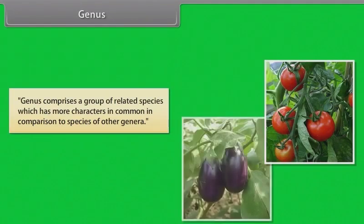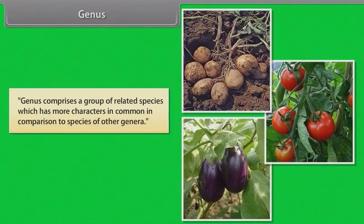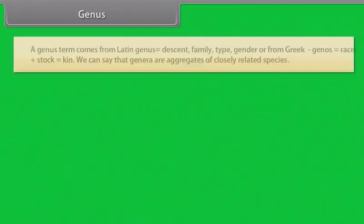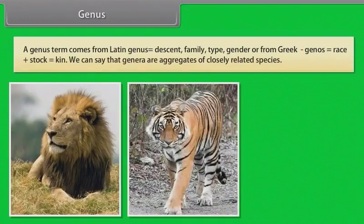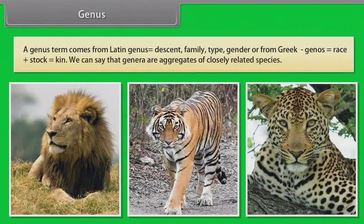A genus comprises a group of related species which has more characters in common in comparison to species of other genera. The term genus comes from Latin, meaning descent, family, or type, or from Greek genos meaning race or stock, which is kin. Genera are aggregates of closely related species.